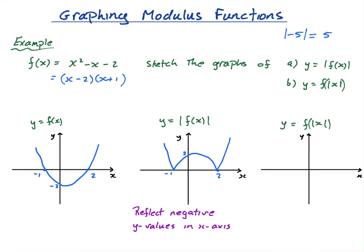The next part is f of mod x, which is slightly more tricky. For the positive x-values, f of mod 5 is just the same as f of 5, so all the positive x-values behave exactly the same. I still have a root at 2, it still comes down, turns, and goes back up.